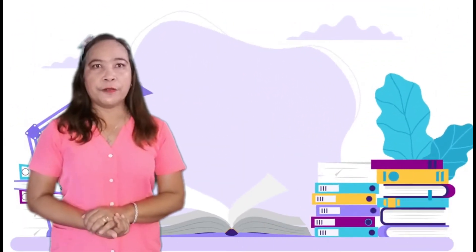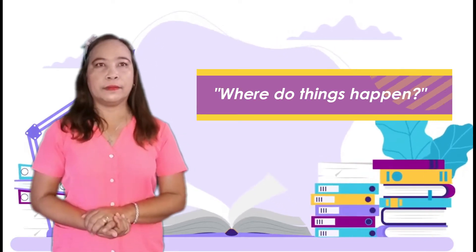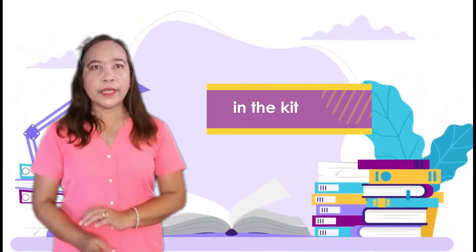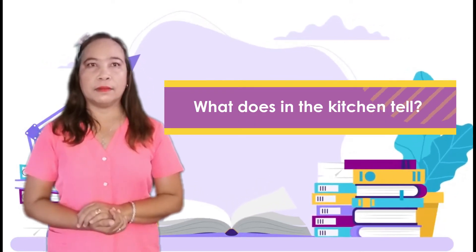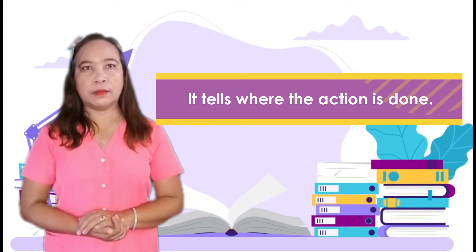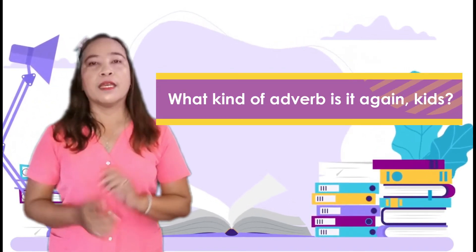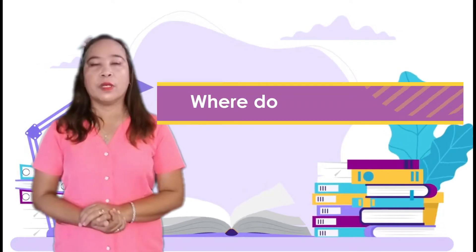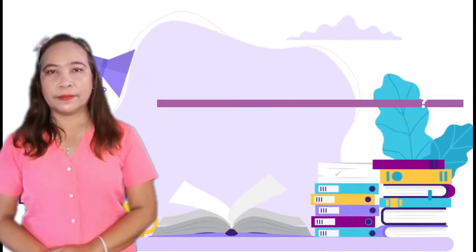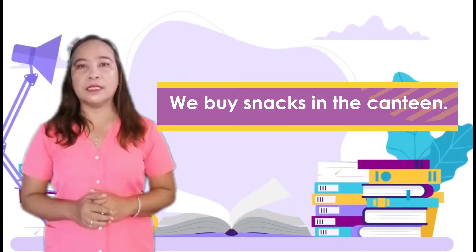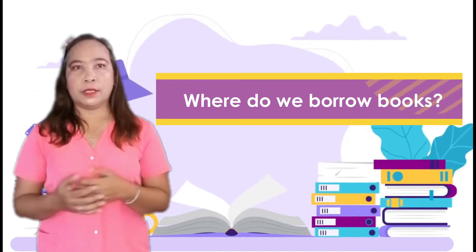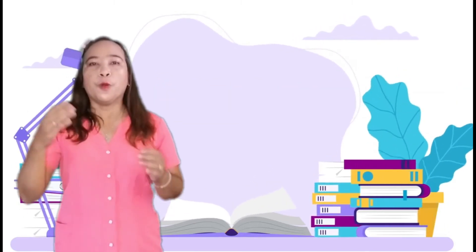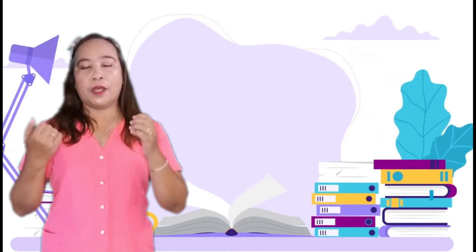Kids, let's try the first activity called 'Where Do Things Happen?' For example, where does mother cook our food? In the kitchen. What does 'in the kitchen' tell? It tells where an action is done. What kind of adverb is it? It is an adverb of place. Now let's try the rest. Where do we buy snacks? We buy snacks in the canteen. Where do we borrow books? We borrow books in the library. Where do we play? We play in the playground.